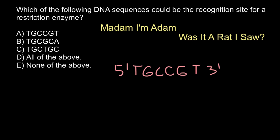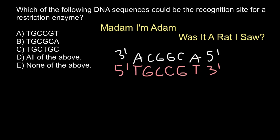So the complementary strand: thymine pairs with adenine, guanine with cytosine — giving us A-C-G-G-C-A, running five-prime to three-prime. Now if we read T-G-C from five-prime to three-prime on the top strand, on the complementary strand we have C-G-T, which is a totally different sequence. So this is not answer A.